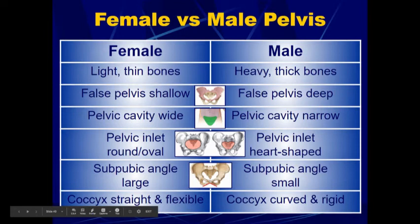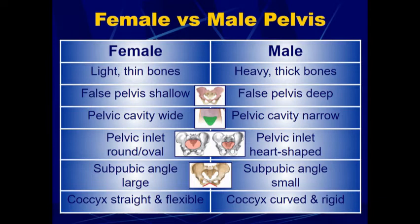Male and female pelvises are different, and the main differences are because of childbirth. Females have light, thin bones, whereas males have heavy, thick bones for their coxal bones. Females have a shallow false pelvis while males have a very deep false pelvis. Females have a wide pelvic cavity; males have a narrow pelvic cavity. Females have a pelvic inlet that is round or oval shaped; males have a pelvic inlet that is heart shaped. In females, the subpubic angle is very large, making the pelvis more wide, while in males the subpubic angle is small, making the pelvis more narrow.